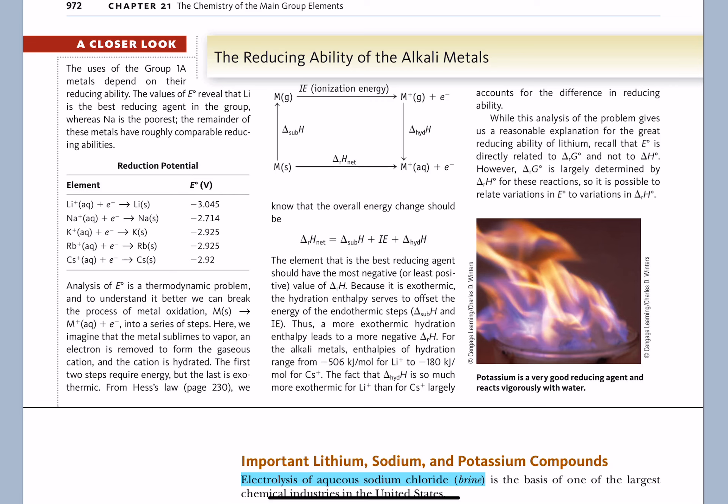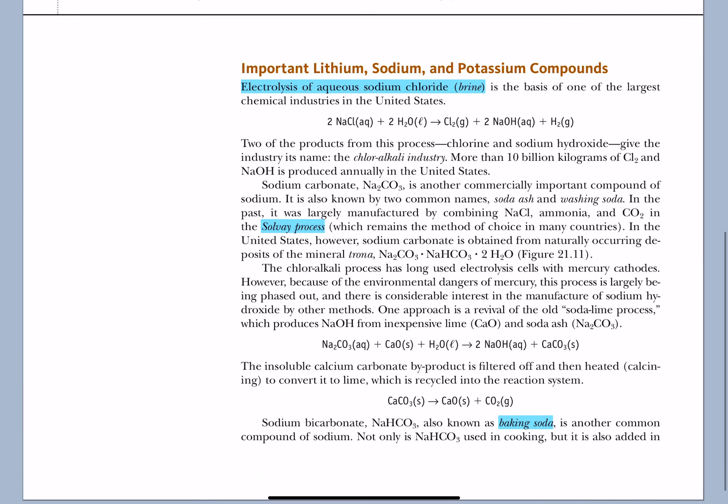You should know that alkali metals are really good reducing agents. A reducing agent helps something to be reduced. To be reduced means to gain electrons. So if you are a reducing agent, you have to help some other element gain electrons, which means you have to be the source of that electron. Metals are good sources of electrons, so they are good reducing agents.